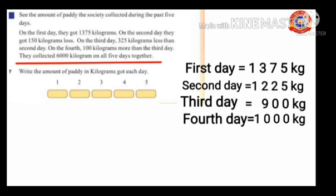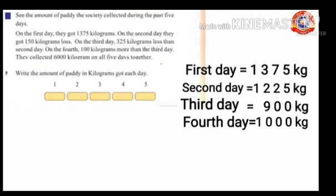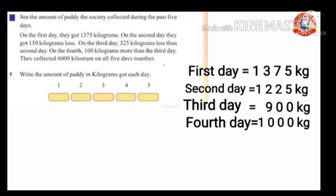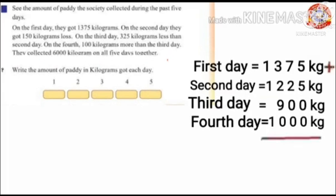On all five days together they collected 6000 kilograms. To find out the paddy collected on the fifth day, we have to subtract the total collection of four days from 6000 kilograms. First, find the total collection of paddy in four days together: add 1375 kg, 1225 kg, 900 kg, and 1000 kg.